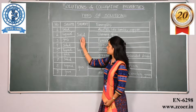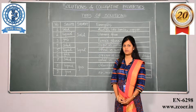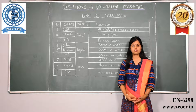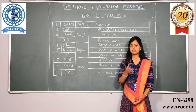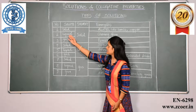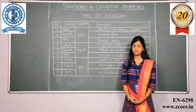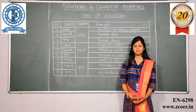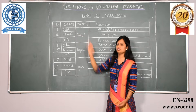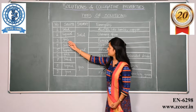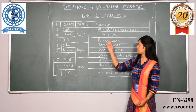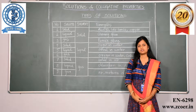Solid-type solutions include solid in solid — for example, alloys such as brass and bronze, which are mixtures of two solid components. The second type is liquid in solid, and a familiar example is chewing gum. The third type is gas in solid, and the example of that is pumice stone.